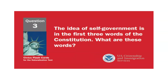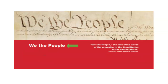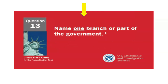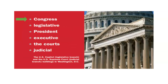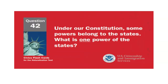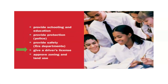The idea of self-government is in the first three words of the Constitution. What are these words? We the people. Name one branch or part of the government. Congress. Under our Constitution, some powers belong to the states. What is one power of the states? Give a driver's license.